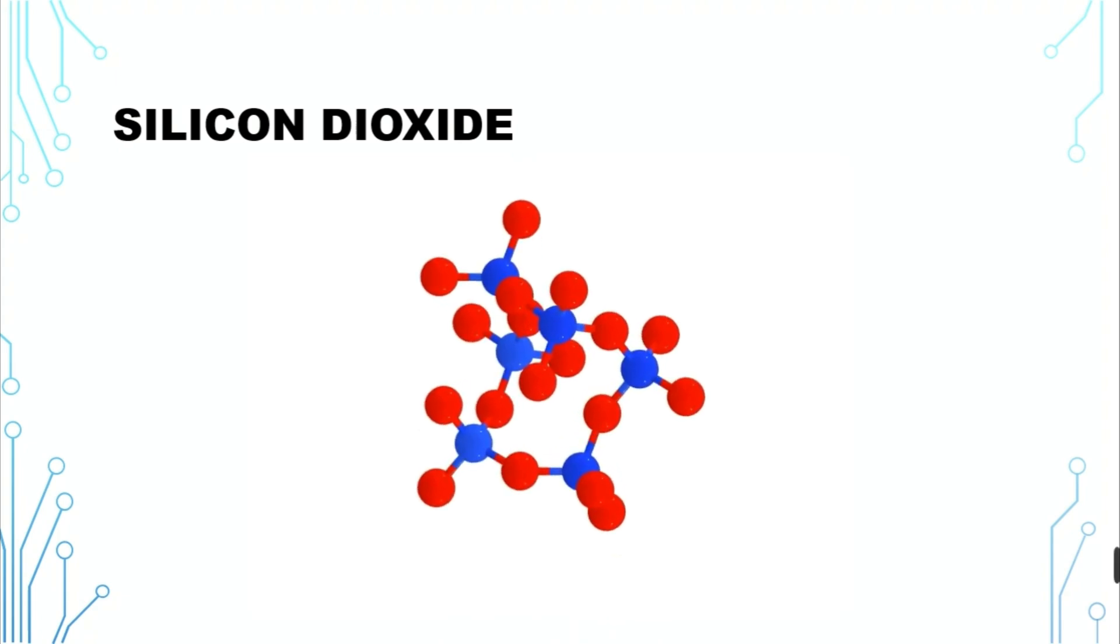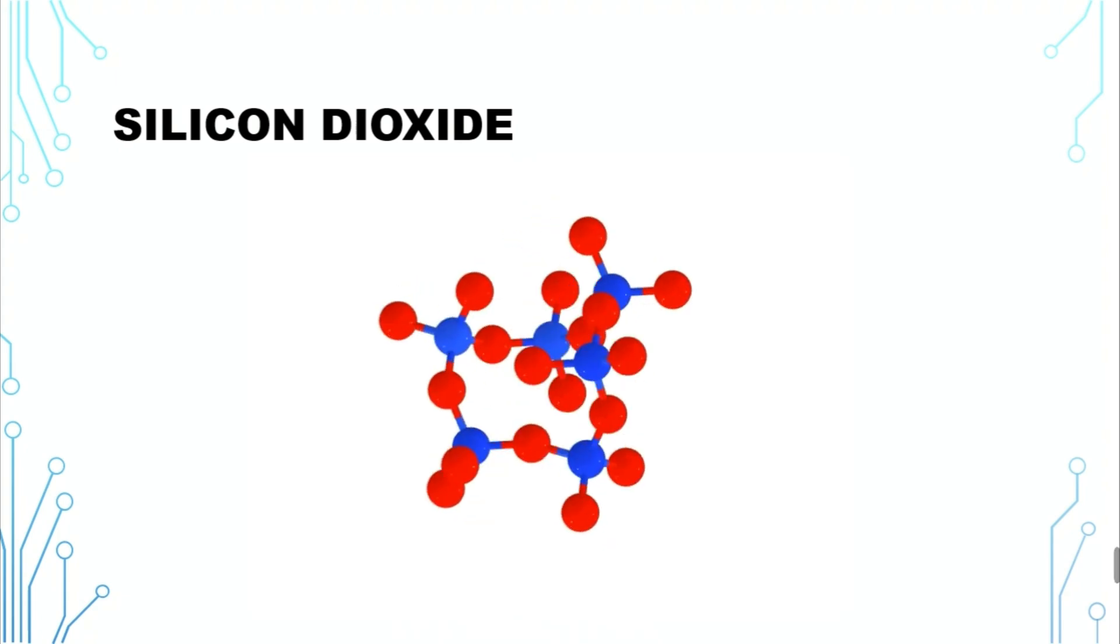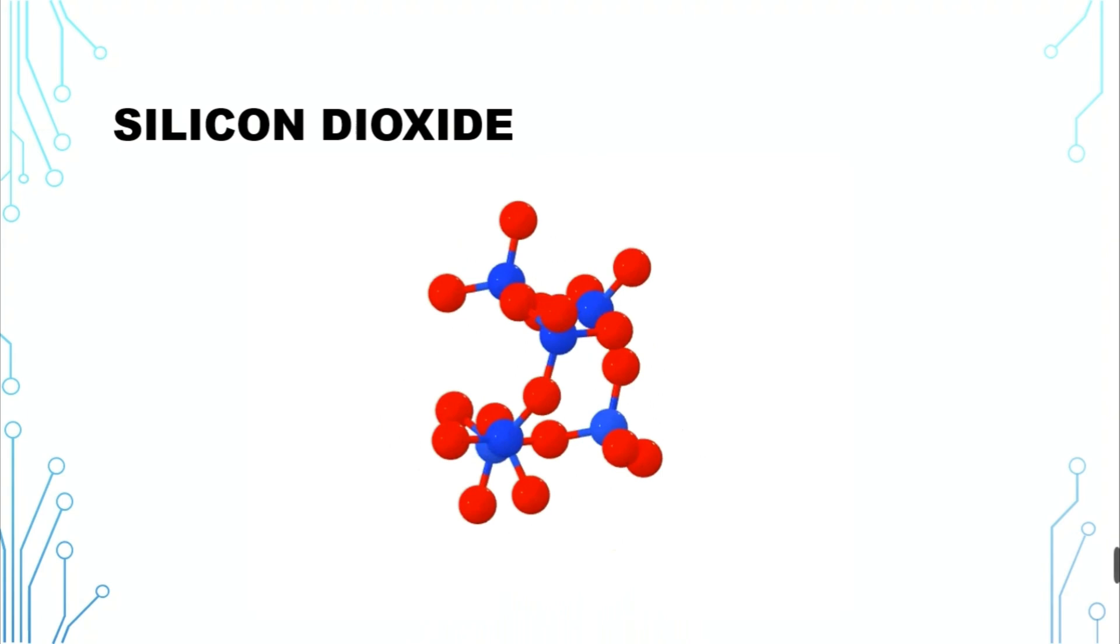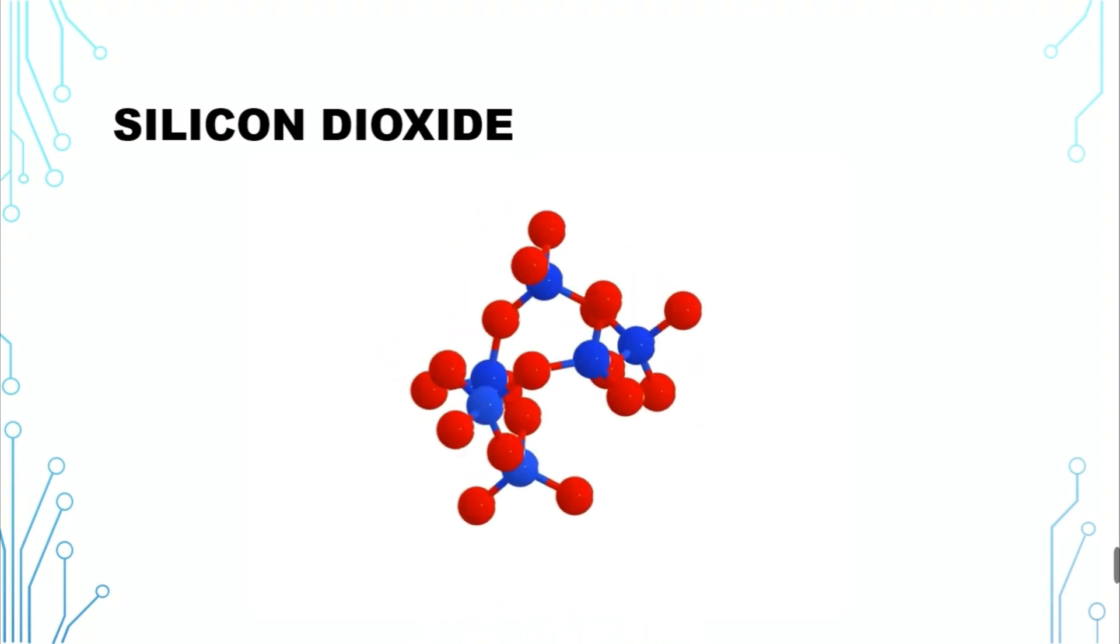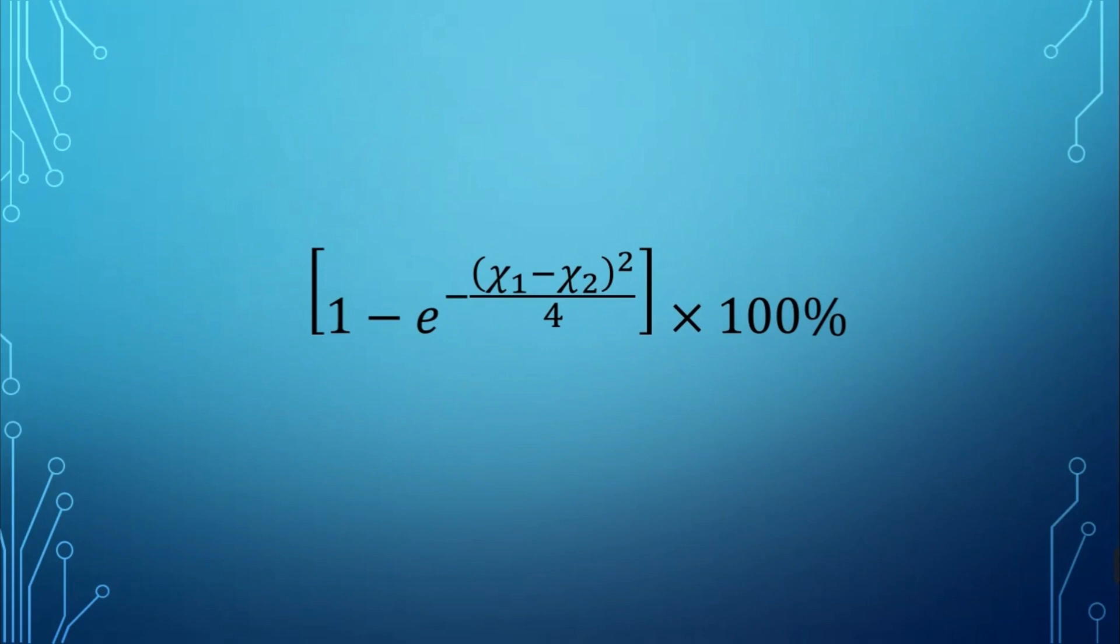The key point is to analyze the difference between electronegativity values of the silicon atom and the oxygen atom, and then use the bond polarity equation to calculate the percent ionic character. Let's check them out.